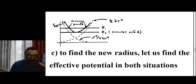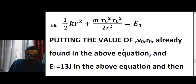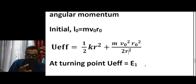For the third part, after receiving the extra energy the mass moves in a new orbit. We need to find the two values of r — the minimum and maximum radii of the ellipse. The approach is to find the effective potential: (1/2)kr² is the spring potential energy, plus mv₀²r₀²/(2r²) is the angular kinetic energy component of the effective potential.